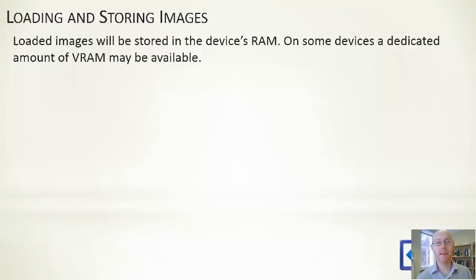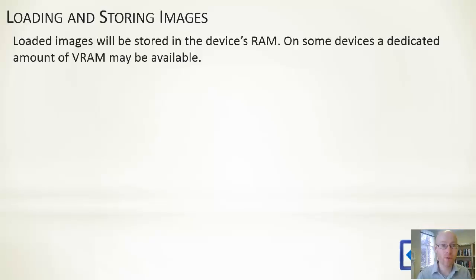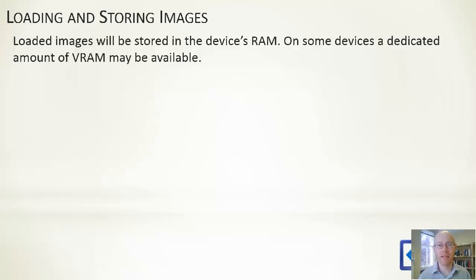When we load something in — let's say a graphic image — it gets stored on the device's RAM. If it's something we're going to draw, quite often on a lot of devices there's a dedicated piece of RAM set aside for the video card, or VRAM. That often is quite a lot faster than normal RAM, or it may be set aside very close in terms of access speed to the video hardware. Long and short, when we load something in from disk or from a memory card or wherever we've got the thing stored, it's going to end up in some portion of RAM.